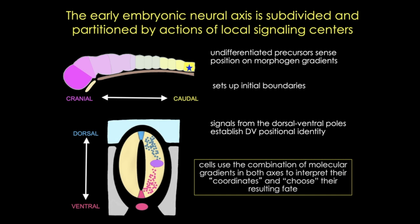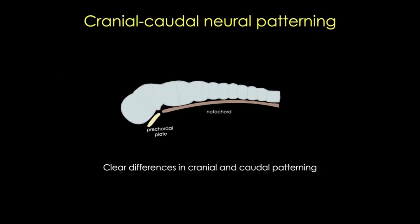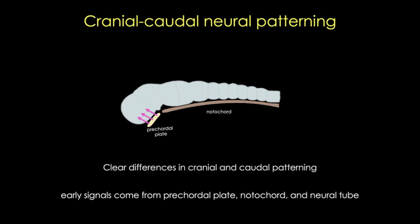Here's our neural tube again with the pre-cordal plate and the notochord labeled. The pre-cordal plate is an area of thickened endoderm in contact with ectoderm; it gives rise to the endodermal layer of the oropharyngeal membrane and participates in patterning the cranial neural tube. Early signals that pattern the neural tube come from multiple sources: the pre-cordal plate, neural tube, notochord, and other locations. Some of these signals are fibroblast growth factors, Wnts, and Sonic hedgehog, as well as many other genes including the Hox gene family. For the most part, although we know what the signals are, the patterning process remains poorly understood.